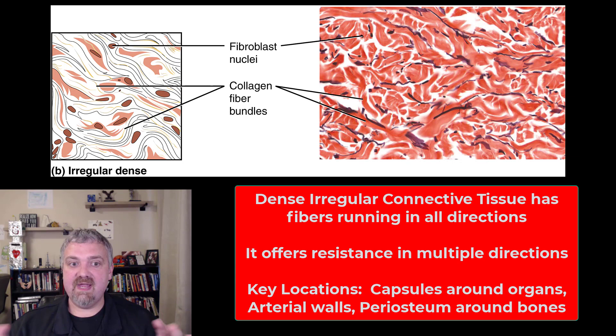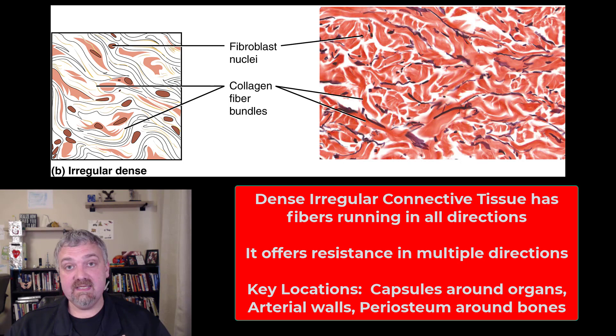You're going to see this in arterial walls, which have dense irregular connective tissue. The capsules around some of our organs — think liver and kidneys — are probably my favorite example. Those are dense irregular connective tissue.